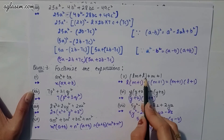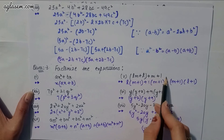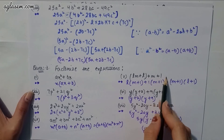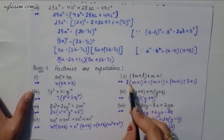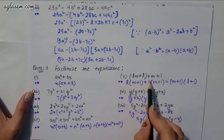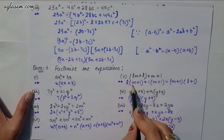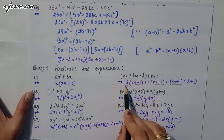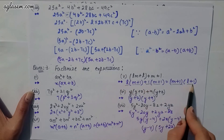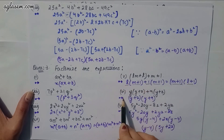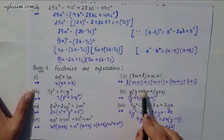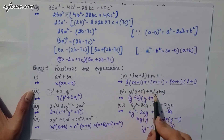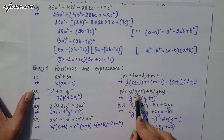Fifth part: lm + l + m + 1. Take l common from first two terms and 1 common from last two: l(m + 1) + 1(m + 1) = (m + 1)(l + 1).